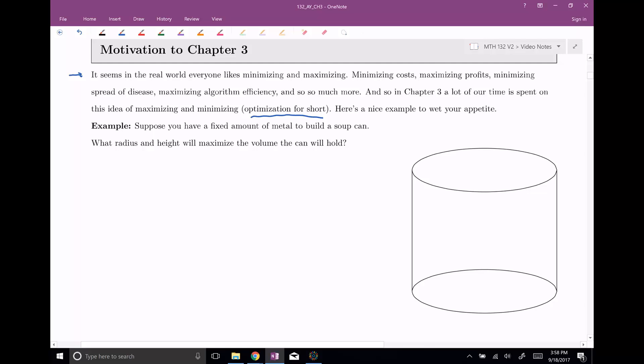And the question becomes, what radius and height should I choose in order to maximize the volume? So I have a fixed amount of surface area, a set amount of material, and I want to know, how can I fit the most inside of it? What is the maximum volume? I want to maximize volume in this case that the soup can can hold.